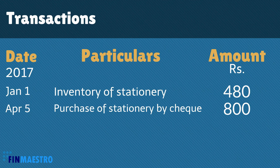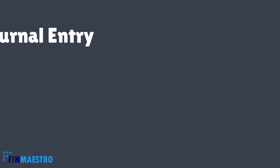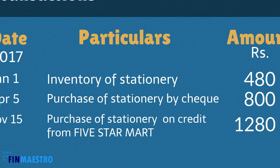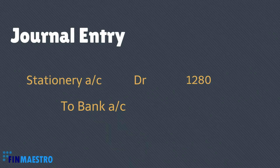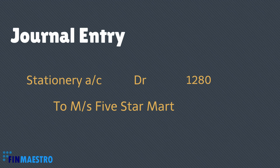Next, we bought stationery from Messer's 5-star Stationery Mart on credit. This also will increase the balance of stationery, but we have not paid any money to Messer's 5-star Stationery Mart. So instead of bank, we will write 'To Messer's 5-star Stationery Mart', Rs. 1,280.